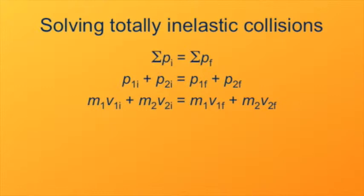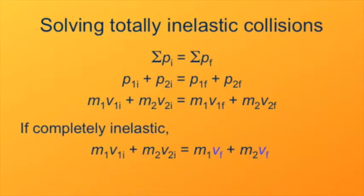Now if the collision is completely inelastic, we have the additional consideration that the final velocities are the same. So v1f and v2f we'll just call vf, because that's the same final velocity. That's a common factor on the right-hand side of the equation, which we can factor out so that the right-hand side becomes the total mass times the final velocity. When the objects travel together, their total momentum is their velocity times their total mass.